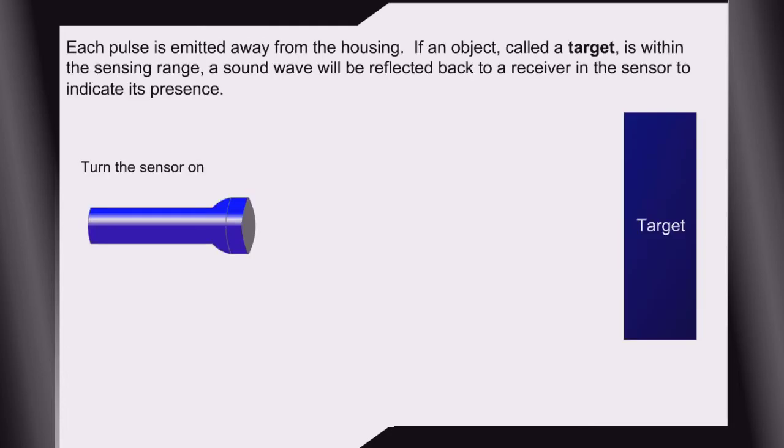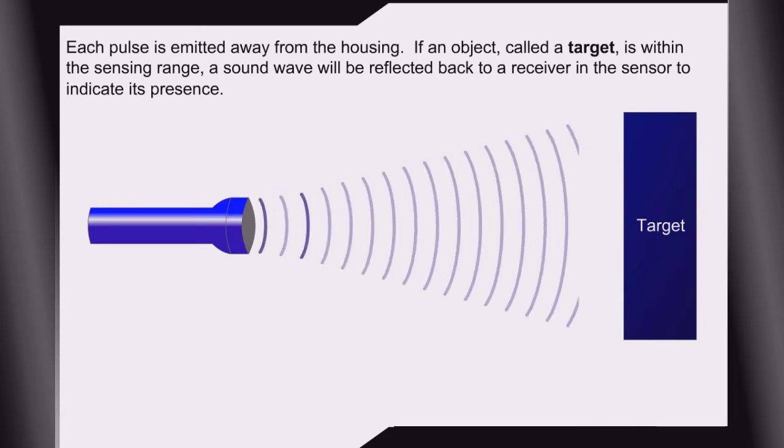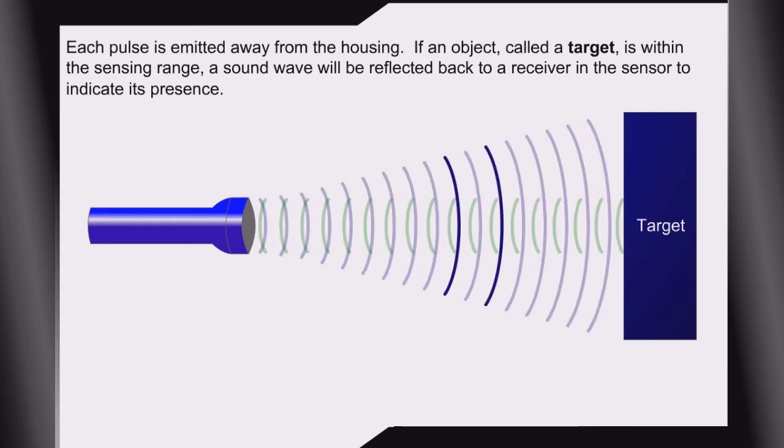Each pulse is emitted away from the housing. If an object, called a target, is within the sensing range, a sound wave will be reflected back to a receiver in the sensor to indicate its presence.